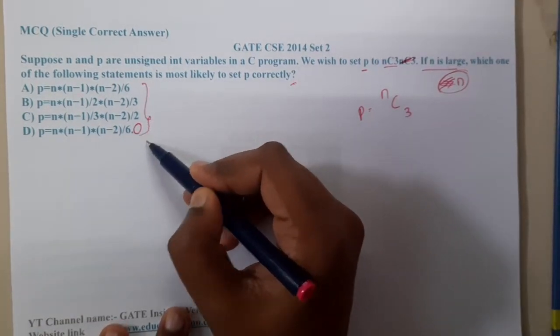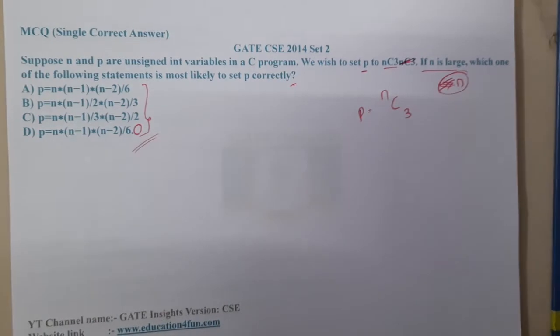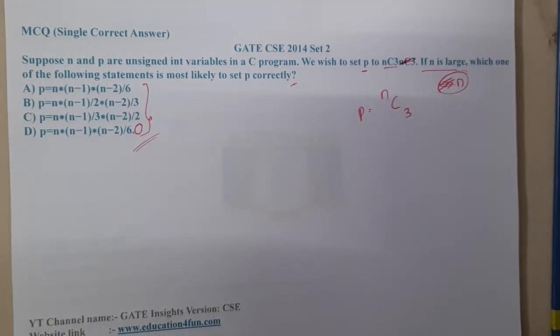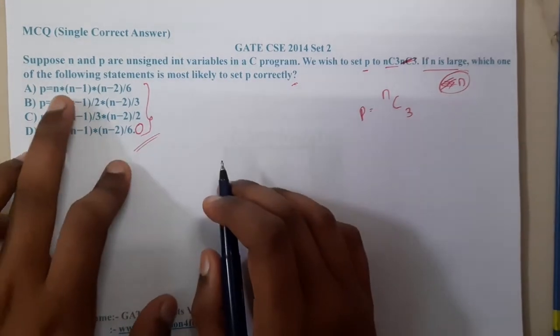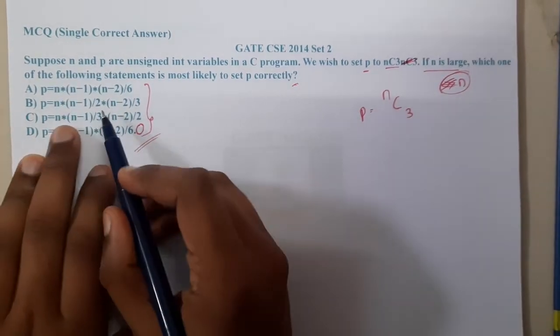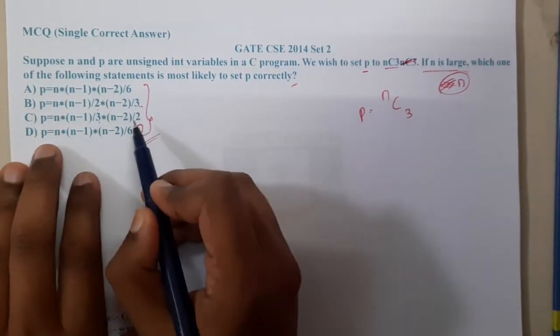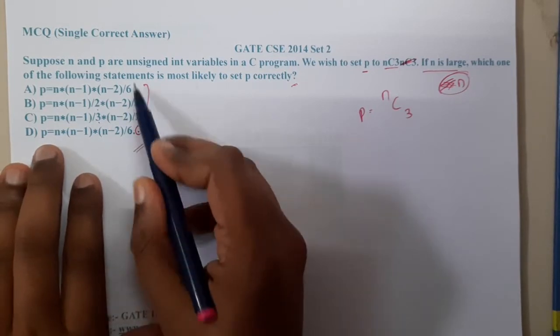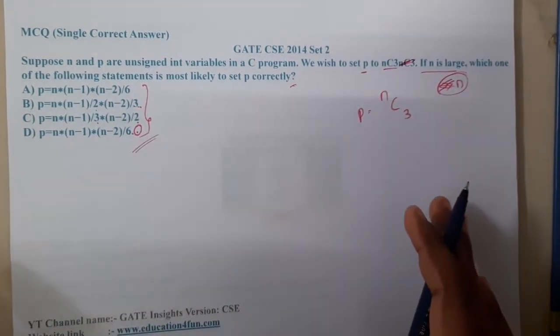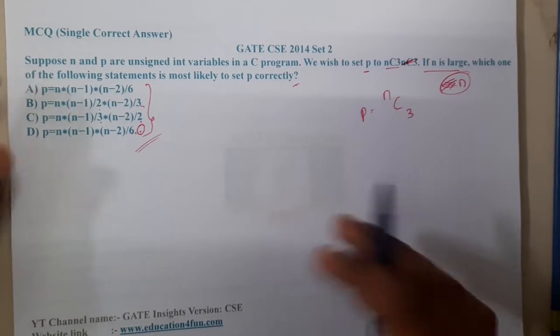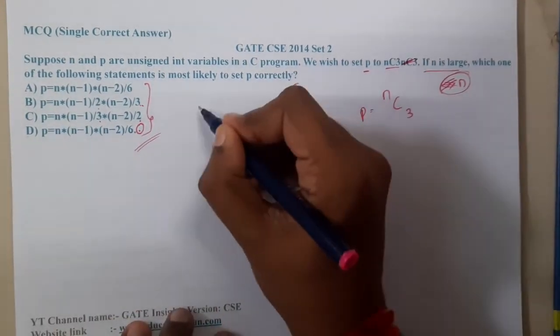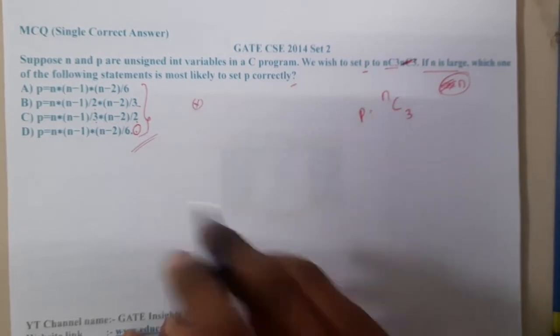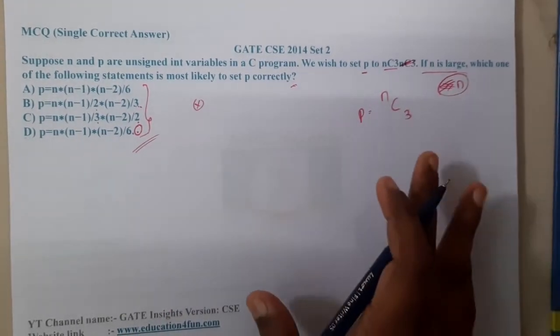If you concentrate carefully, all four options will give you the same result, but their operations are different. If you observe, if you multiply them internally, 3 into 2 is 6, this 3 into 2 is 6, this is 6.0, so all options are exactly the same. If you substitute the values, you will get the same answers.